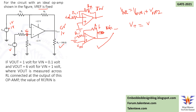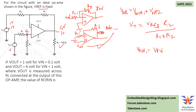For the non-inverting terminal, V+ is the voltage divided between R1 and R2, so V+ = Vref · R2 / (R1 + R2). This node voltage feeds into the non-inverting configuration. Taking the gain, Vout1 = Vref · R2/(R1 + R2) · (1 + RF/R1). This is the output for the non-inverting configuration.